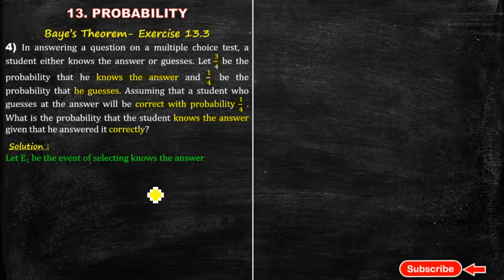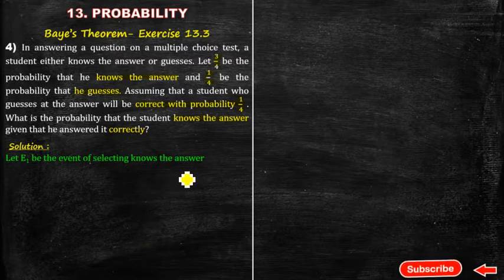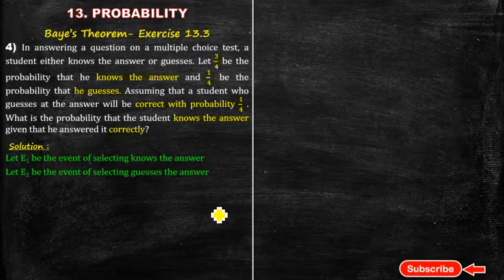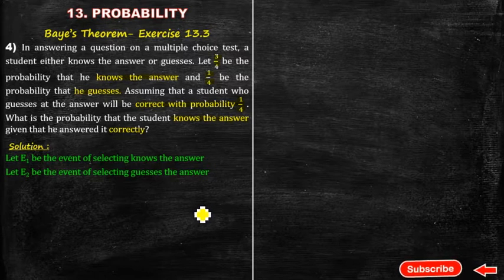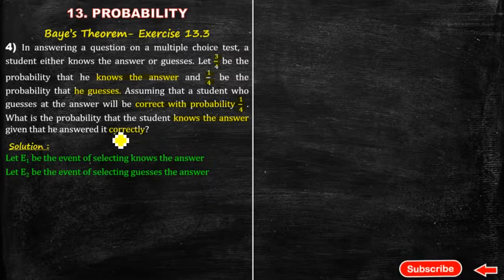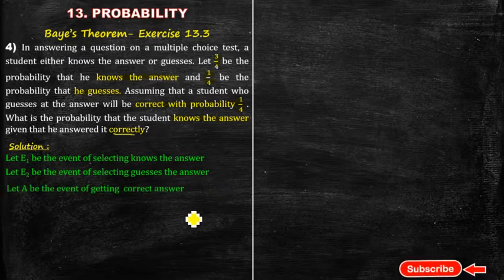Let E1 be the event of the student knowing the answer, and E2 be the event of guessing the answer. Let A be the event of getting the correct answer. These are the definitions from the given data.